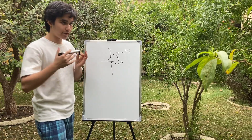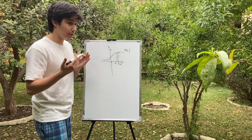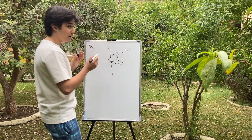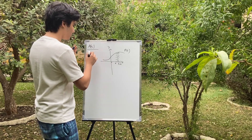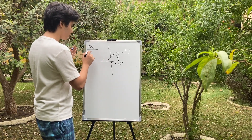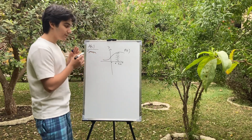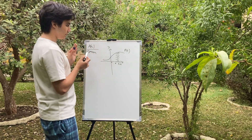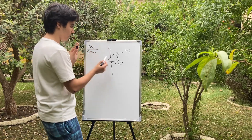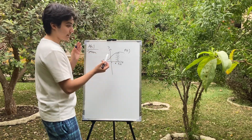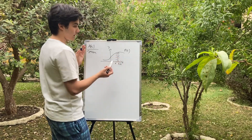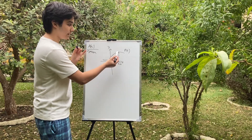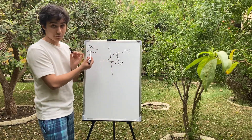Let's assign a variable to calculate our area between given bounds. If I say A of x, we define a function right over here that calculates the area of a graph at any given x value. For instance, A of x calculates the area from zero to x. A of x plus h calculates the area from zero to x plus h. Now let's try to find an expression for the area of this shaded region in terms of A of x.